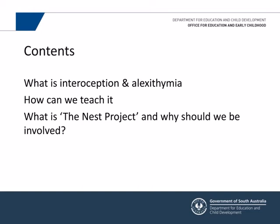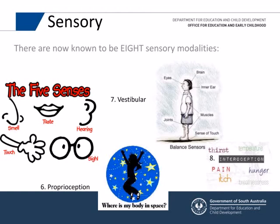We now know that there are eight sensory modalities. Everyone will have known the five: smell, taste, hearing, touch and sight. Those who've done a lot of autism work will know about vestibular and proprioception, which are both around the body. And the eighth one is interoception, which is your awareness of your internal body state — both your physical body state and your emotional body states.